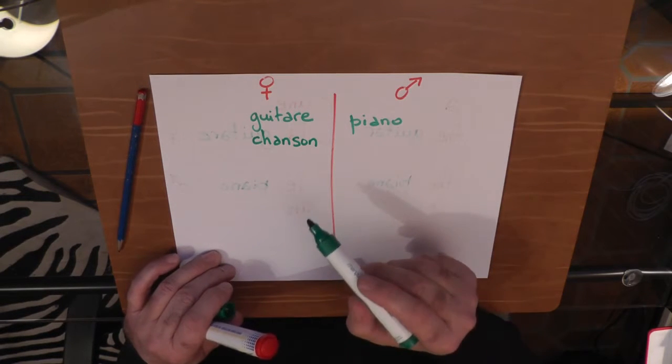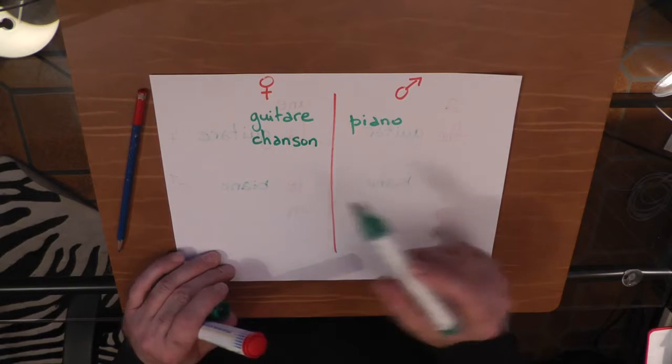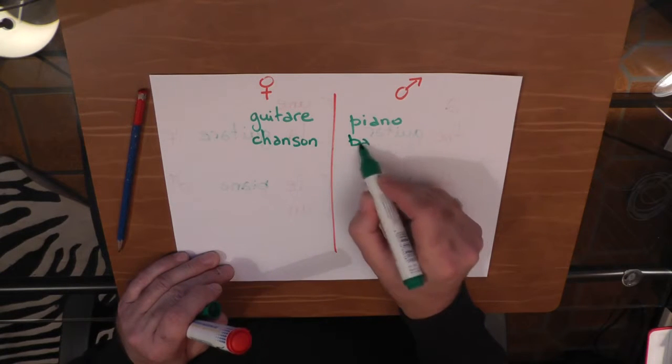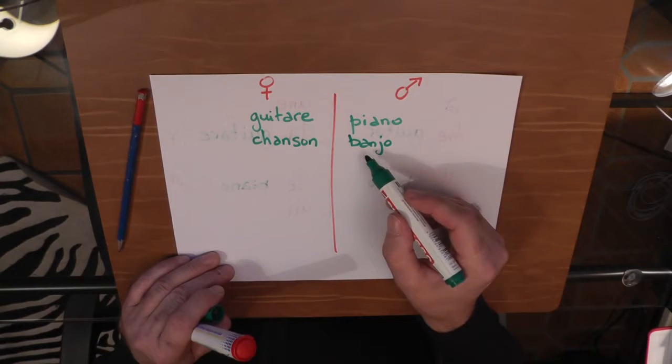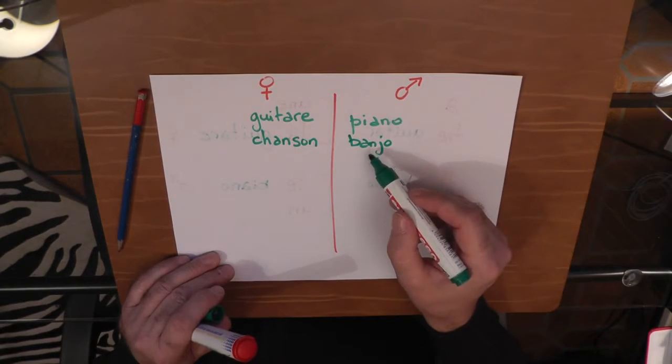Or, for example, if you say, I don't know, banjo. I play banjo, I love this instrument. So, un banjo, le banjo, we say it's masculine.